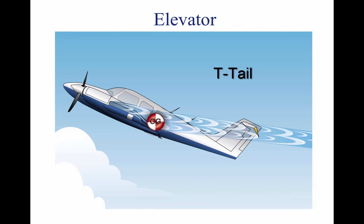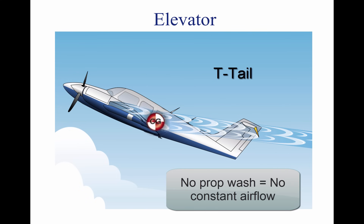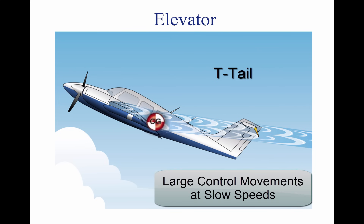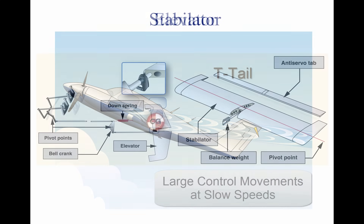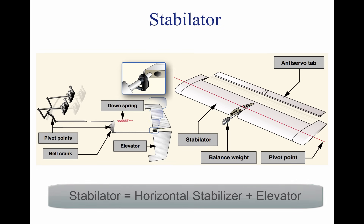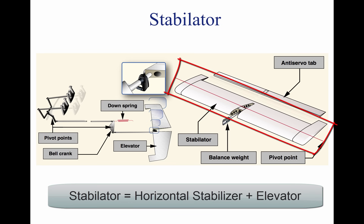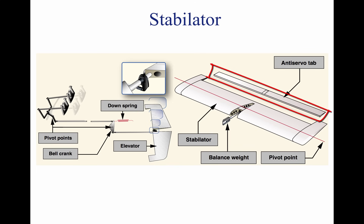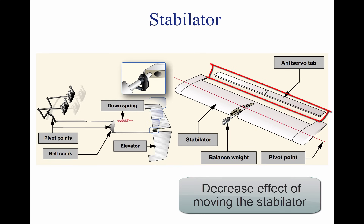Because the T-tail elevator is removed from prop wash and not receiving constant airflow, the pilot must make large control movements when flying slowly to control the nose. A stabilator works in much the same way as an elevator, but instead of a trailing edge control surface, the entire horizontal stabilizer moves up and down along a pivot point. A stabilator downspring may be used to increase nose-down pressure if the center of gravity is placed aft. An anti-servo tab is placed on the back of the stabilator to decrease the effect of moving the control surface, reducing pilot-induced over-controlling.